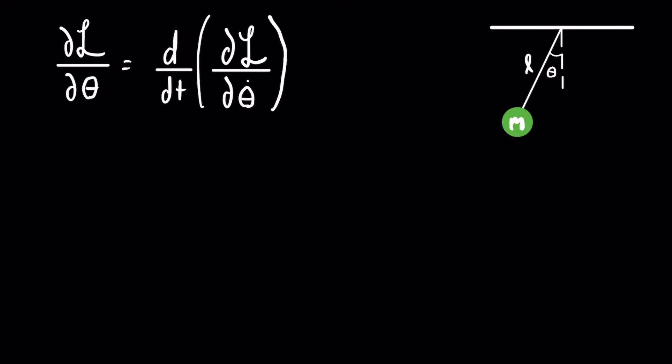Now we will use Lagrangian mechanics to find the equations of motion for a simple pendulum. On the left you'll see the equation we will be using, and on the right we have our image of a simple pendulum where the bob has mass m, the string is length l, and we will be using the angle to describe the motion of the pendulum.